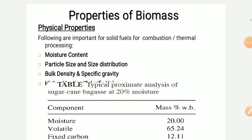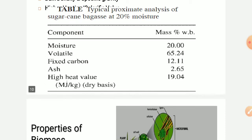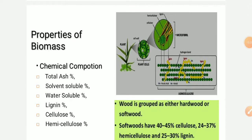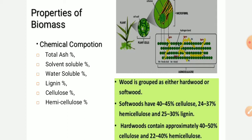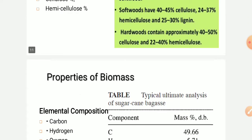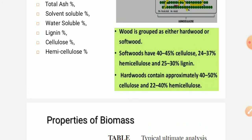The properties of biomass include physical properties important for combustion and thermal processing: moisture content, particle size and size distribution, bulk density, and specific gravity. Chemical properties include moisture content, volatile matter, fixed carbon, ash content, and high heat values. Compositional properties include total ash content, solvent solids, water soluble content, lignin, cellulose, and hemicellulose. For wood (hardwood or softwood), cellulose content is approximately 40 to 45 percent.